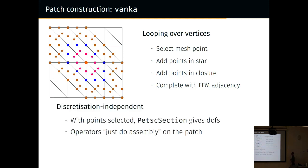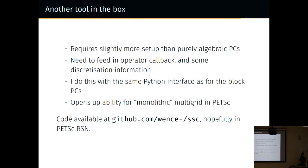What's nice about this is it's completely discretization independent, because you've split the subspace decomposition into a topological thing, plus where did I get the DOFs from—from the function space—and then your operators just do assembly on the patch, whatever that means. I think this is quite nice. It requires slightly more setup than purely algebraic preconditioners. You need to feed in the operator callback and some discretization information. I think the beautiful way to do this would be to make lots and lots of tiny little DMs, because then everything falls through, but Matt says we tried that in the past, it's too slow.